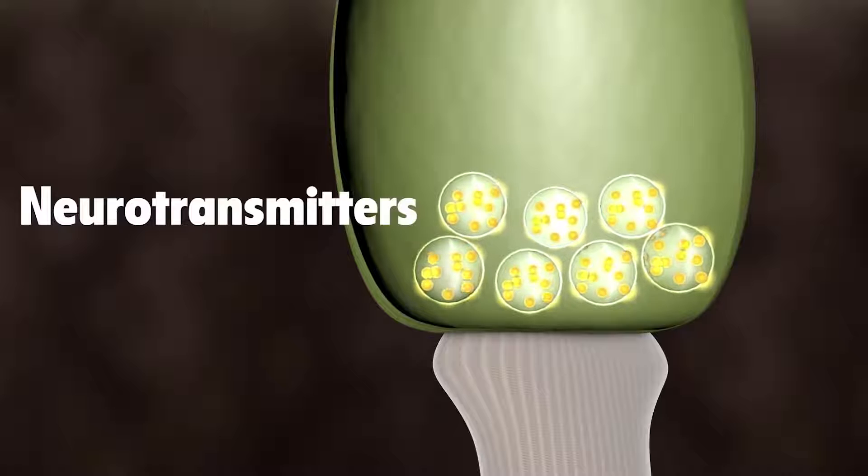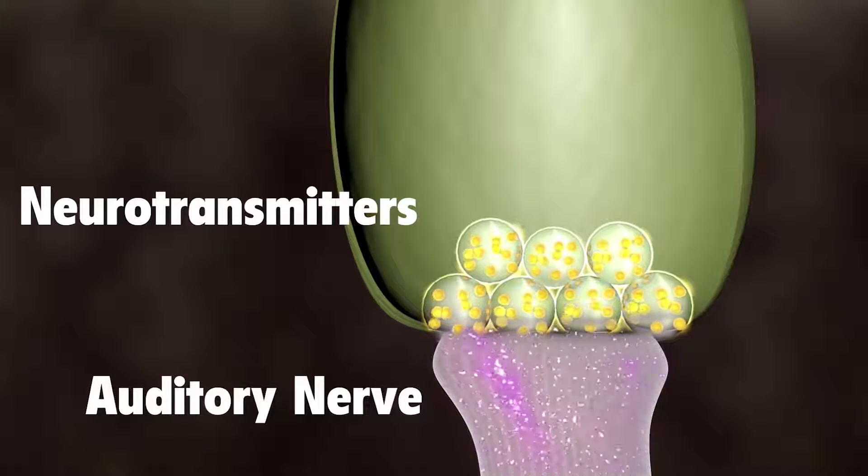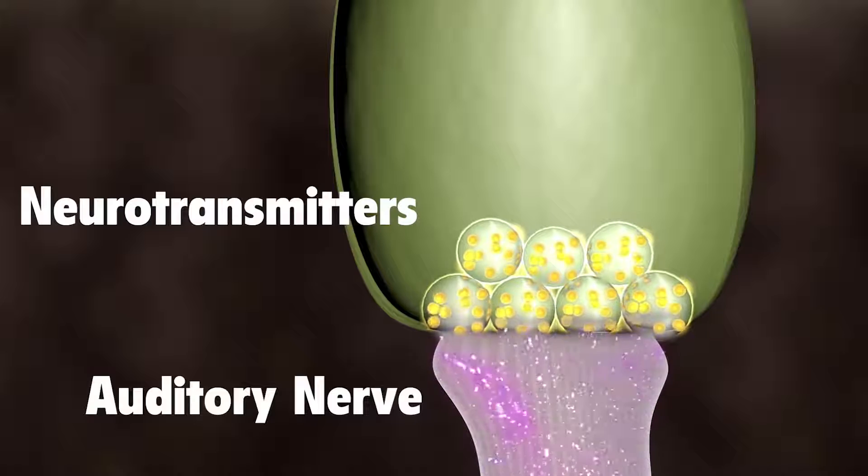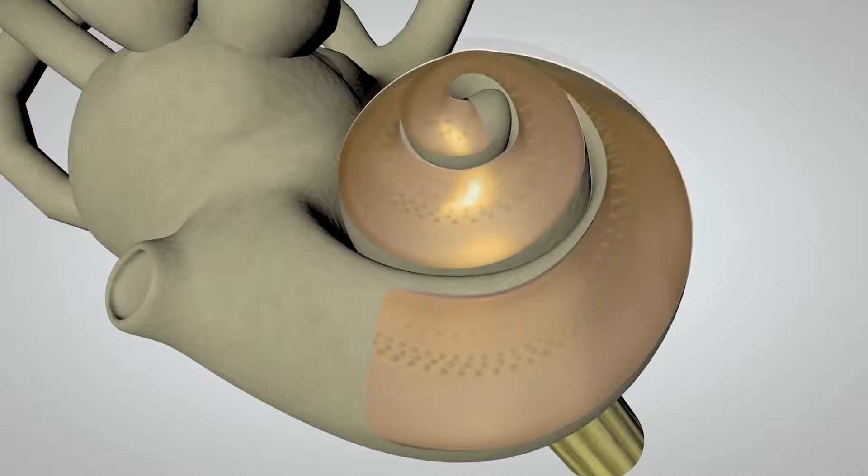The chemicals bind to the auditory nerve cells and create an electrical signal, which travels along the auditory nerve to the brain. Different hair cells respond to different frequencies of sound.